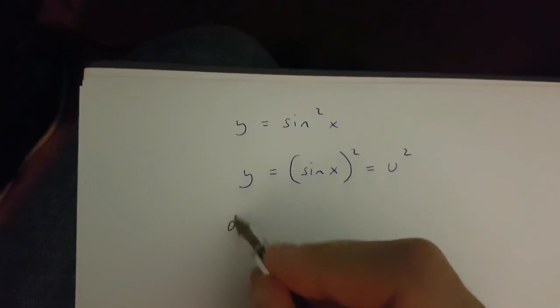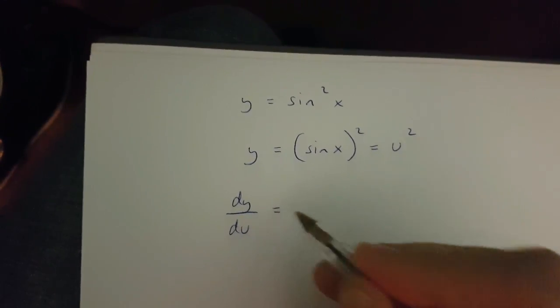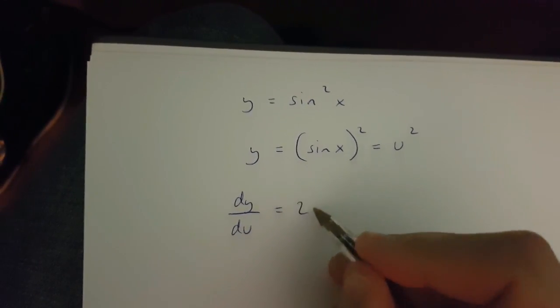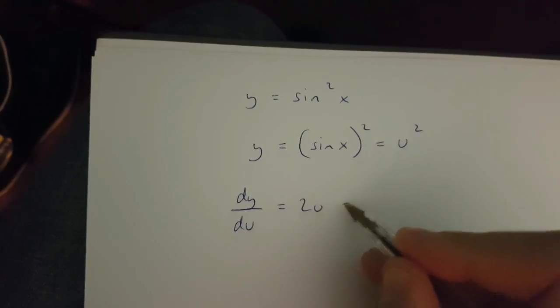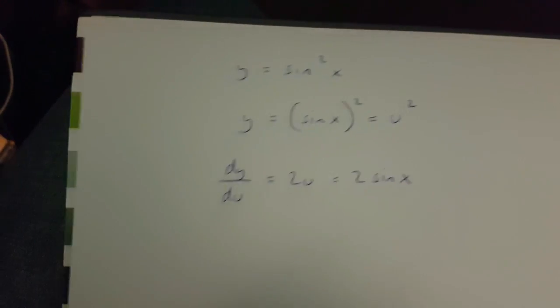Also, dy over du is going to be equal to 2u, which is 2 sin x.